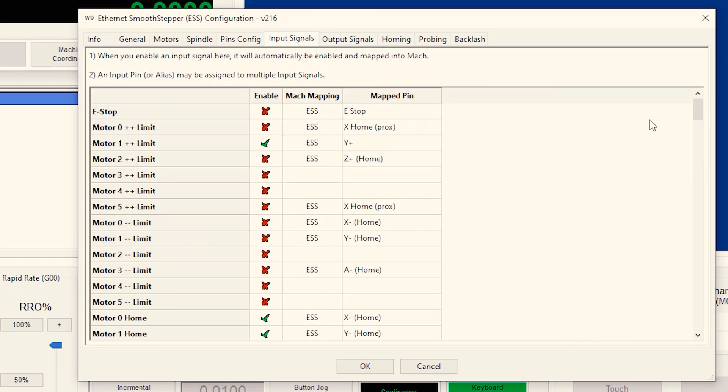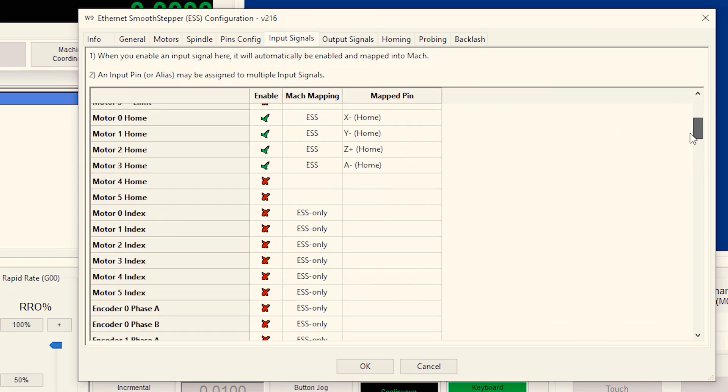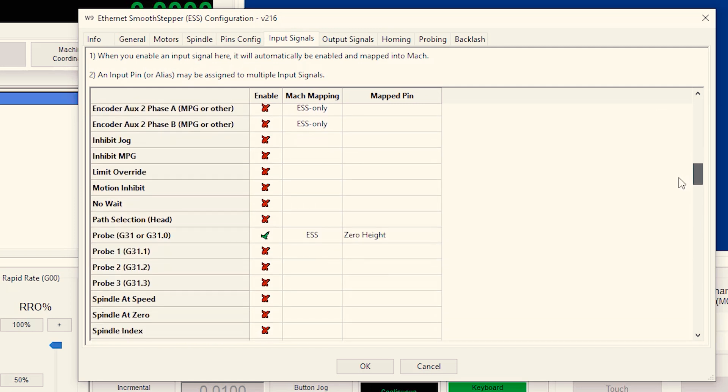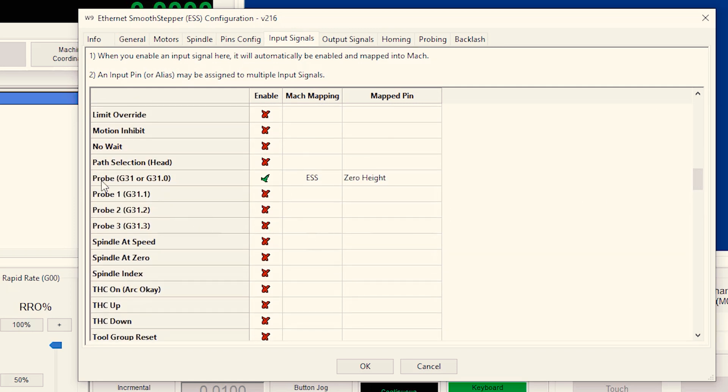Input signals tab. Go down to the probe. Make sure it's enabled. And then set the map to the correct pin.